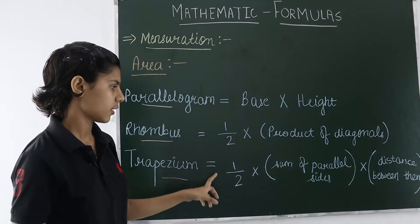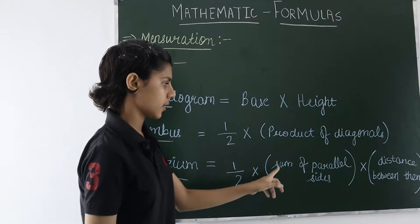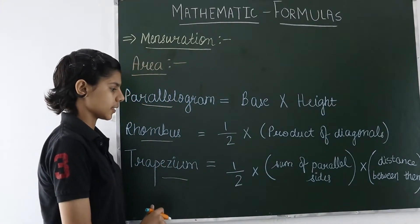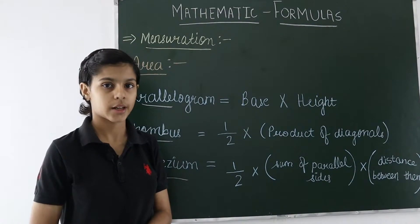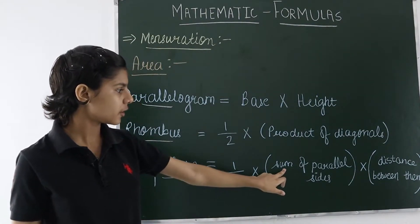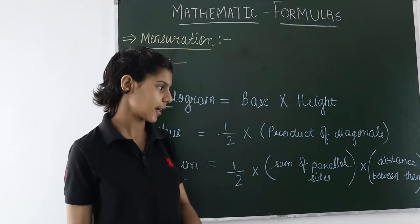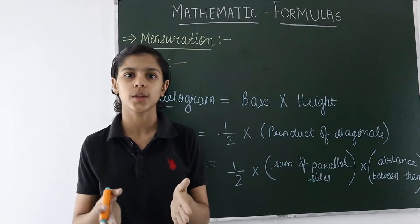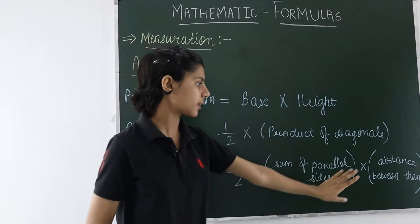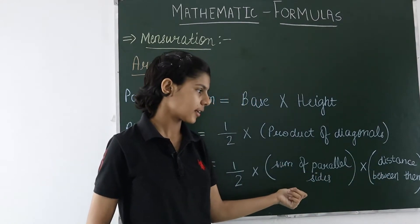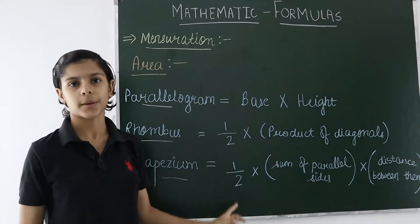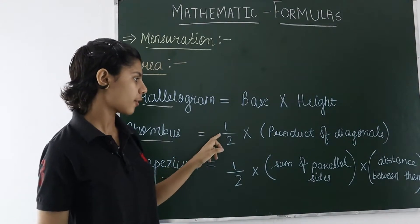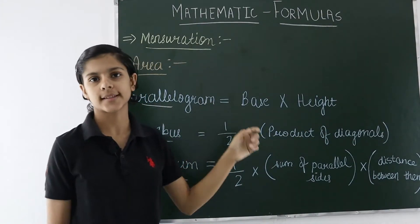For the area of trapezium, we have the formula: 1/2 multiplied by the sum of parallel sides, into the distance between them. In a trapezium we have two parallel sides, so we find their sum, multiply by the distance between them, and then multiply the whole thing by 1/2. To recap: for rhombus it is half into product of diagonals, and for parallelogram it is base into height.